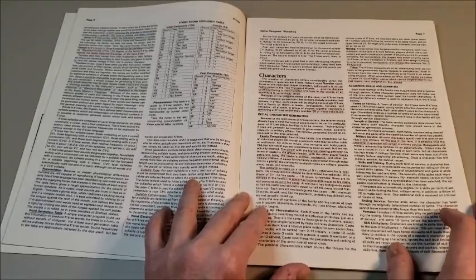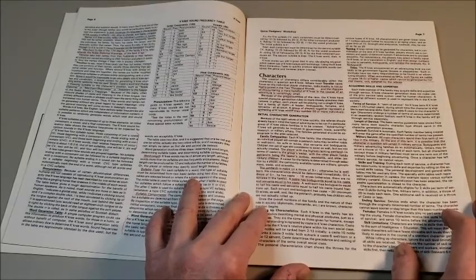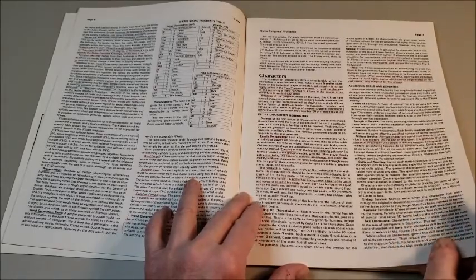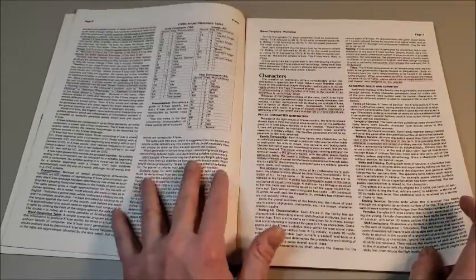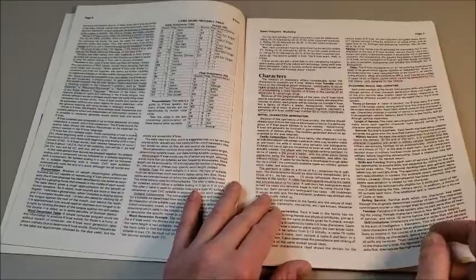By the way, Traveler's Digest 18, I looked it up, is only about $10 to $18 on eBay. So, it is available, and I do recommend it. So, now after we've gone through what the Kakri are, we even get a little bit on their language, we go to the characters in Traveler.